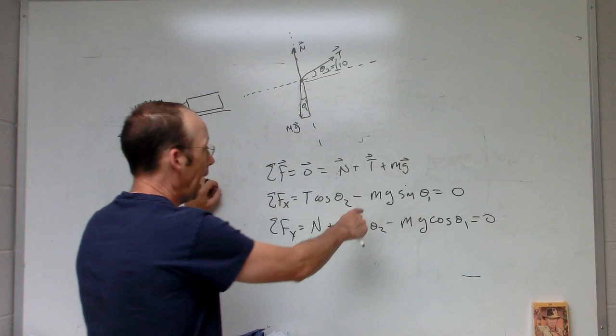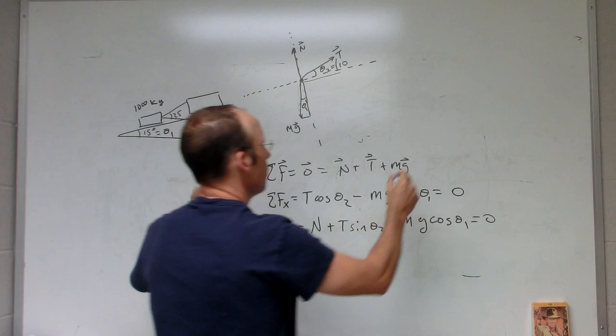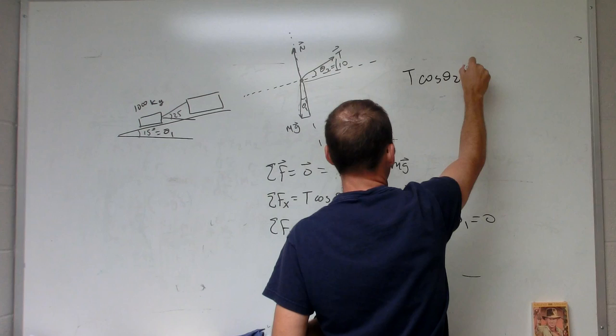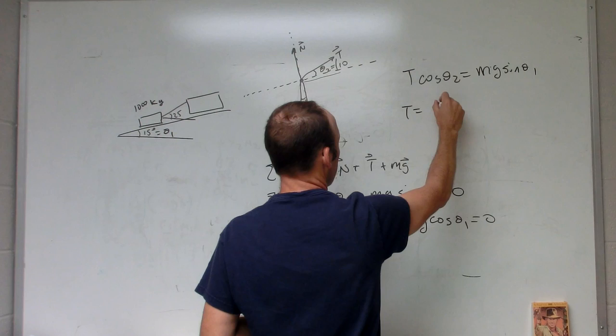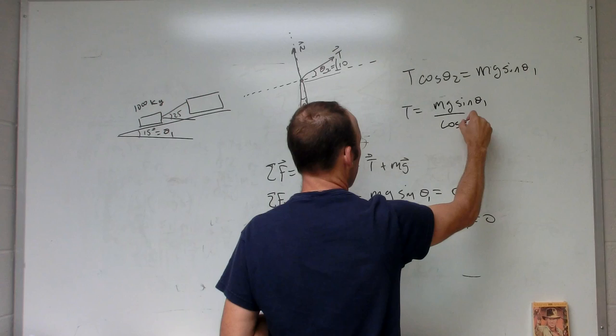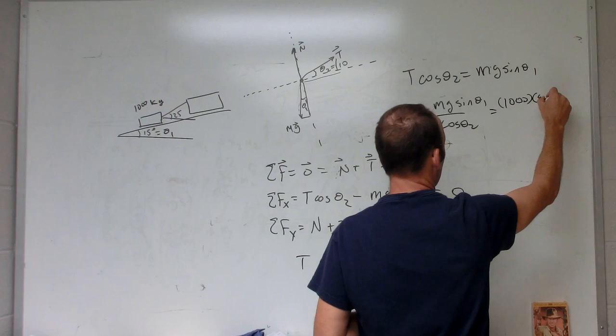If I add mg sin(θ1) to both sides, I get T cos(θ2) = mg sin(θ1). Then I divide both sides by cos(θ2): T = mg sin(θ1) / cos(θ2).